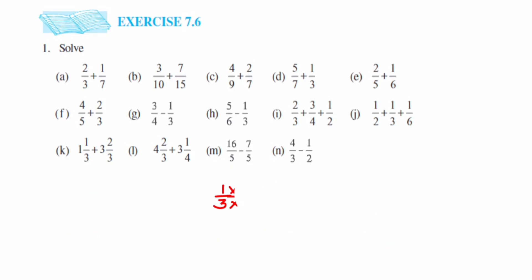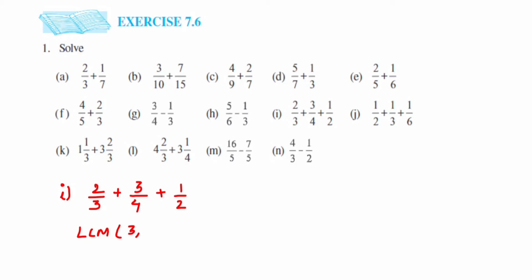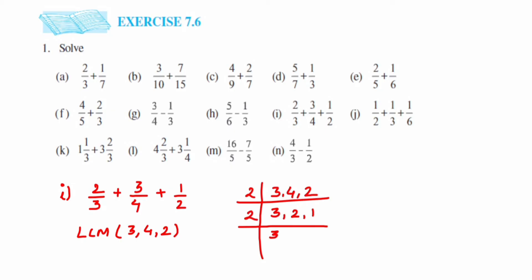Problem I has three numbers to add: 2 by 3 plus 3 by 4 plus 1 by 2. All denominators are different, so we take the LCM of 3, 4, and 2. Taking 2 as a factor: 3 stays, 2 twos are 4, 2 ones are 2. Then taking another 2: 3 stays, 2 ones are 2. Multiply everything: 2 twos are 4, then 4 threes are 12. So the LCM is 12.